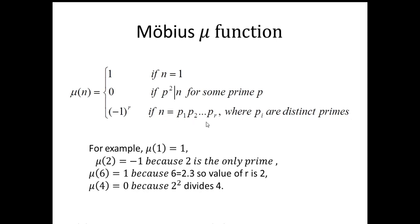For example, μ(1) = 1. μ(2) = −1 because 2 is the only prime factor. μ(6) = 1 because 6 = 2×3, so there are two primes and (−1)² = 1. μ(4) = 0 because 4 = 2², so 2² divides 4.